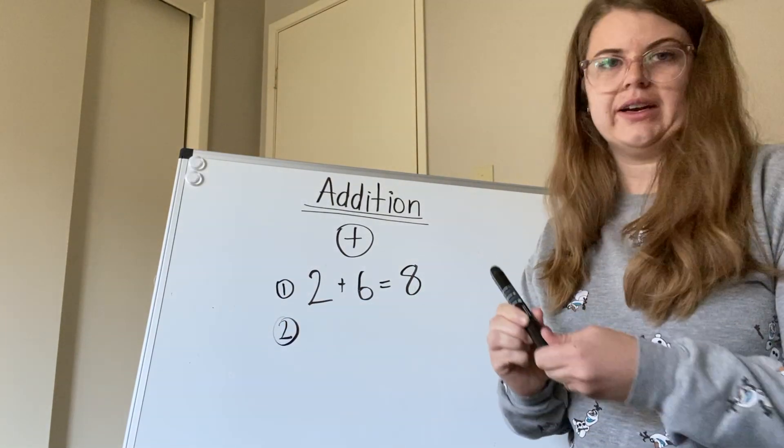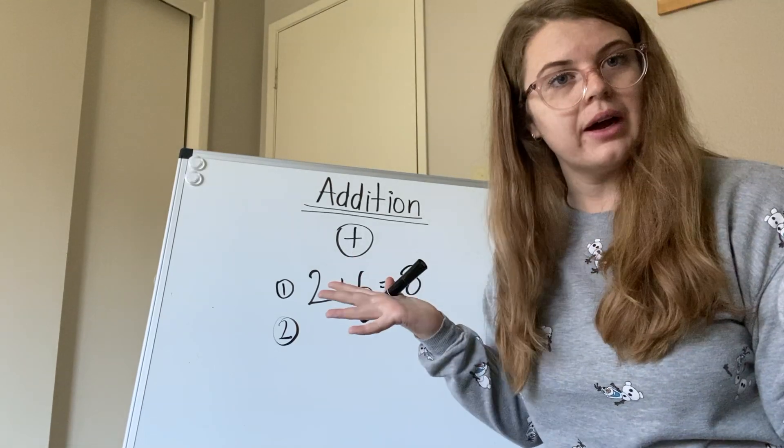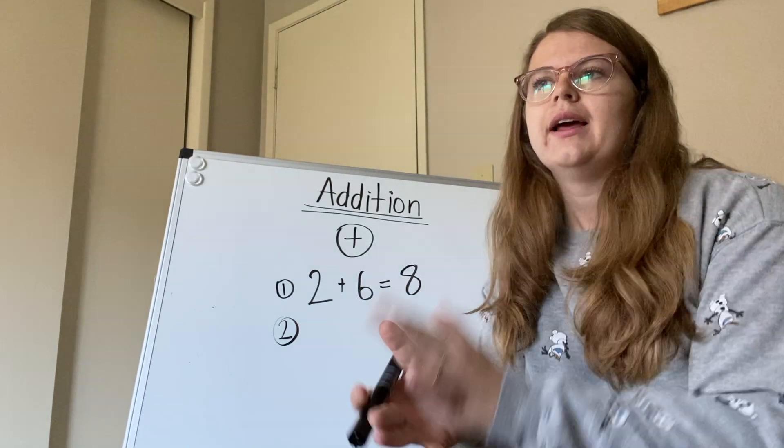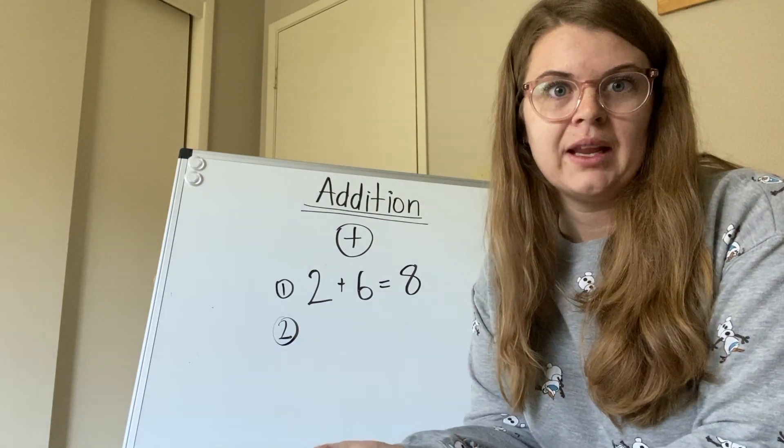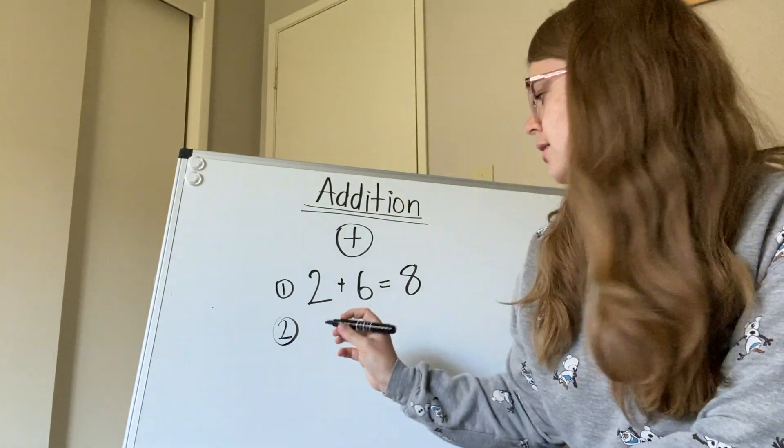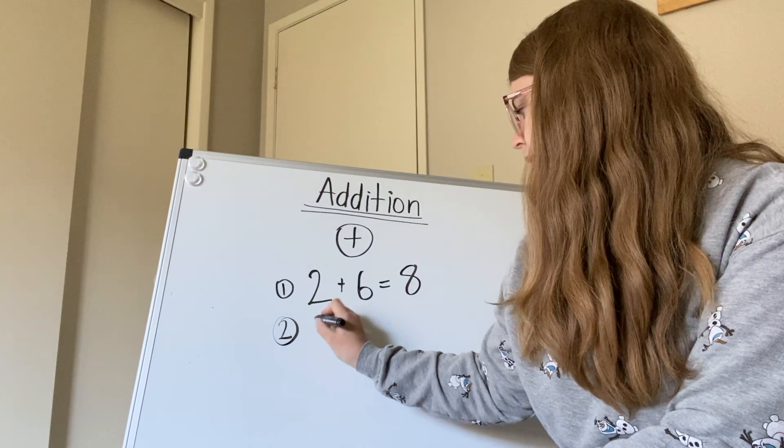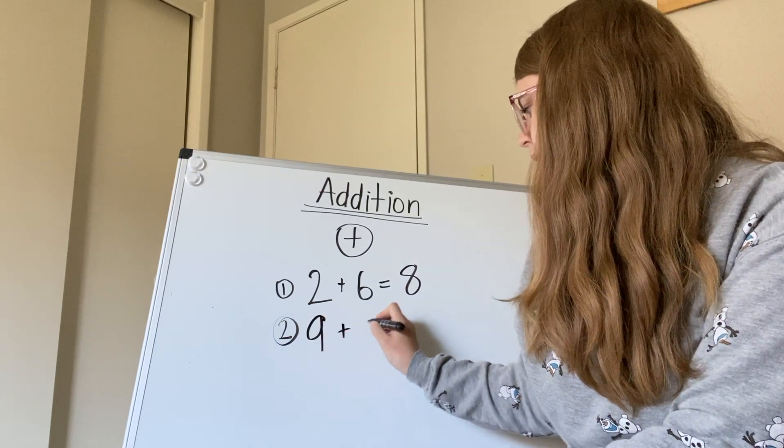Number two, you're gonna have to think of new numbers. Maybe you don't have a dice at home. And so you ask your brother to give you a number. And your brother tells you nine, nine and five.